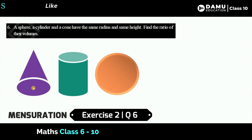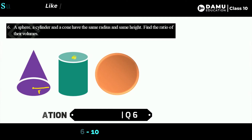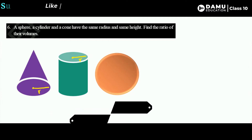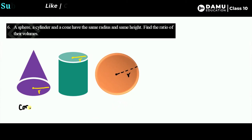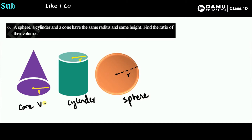So this is the cone with radius r, and this is the cylinder, and this is the sphere. We will label the volume of the cone as V1, the volume of the cylinder as V2, and the volume of the sphere as V3.